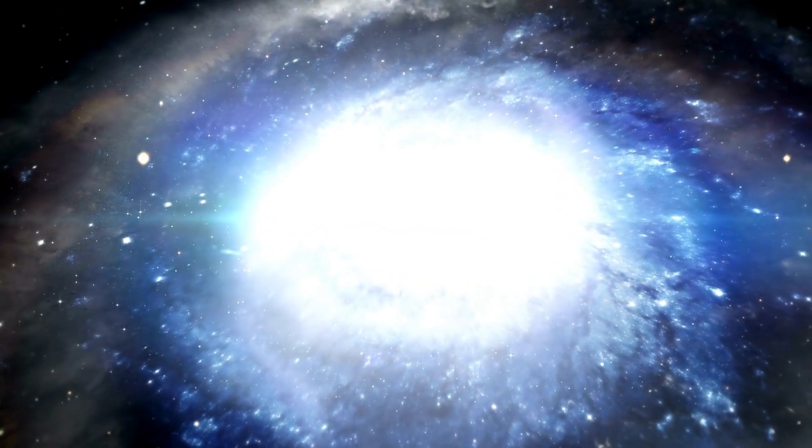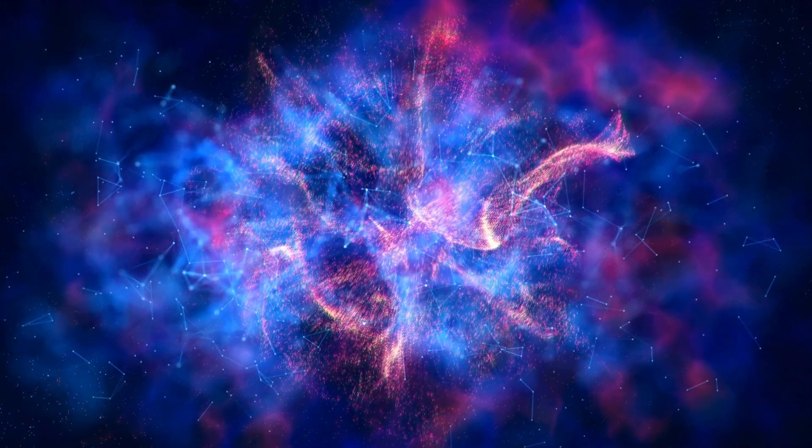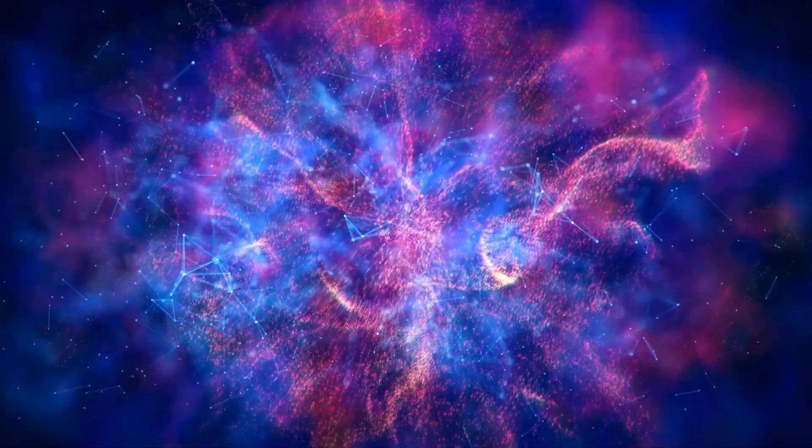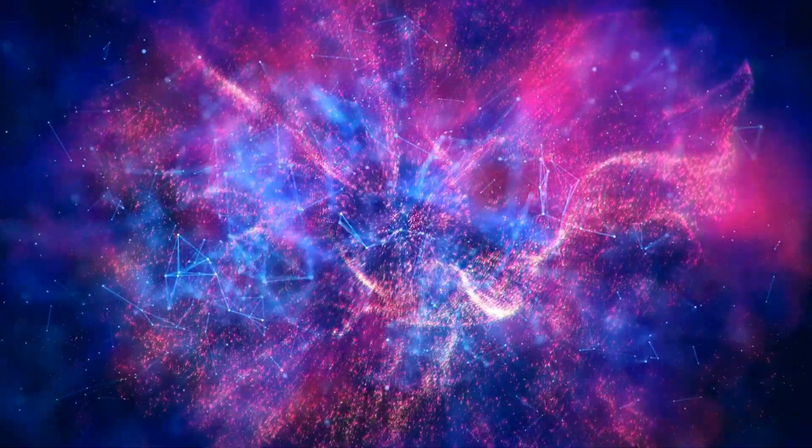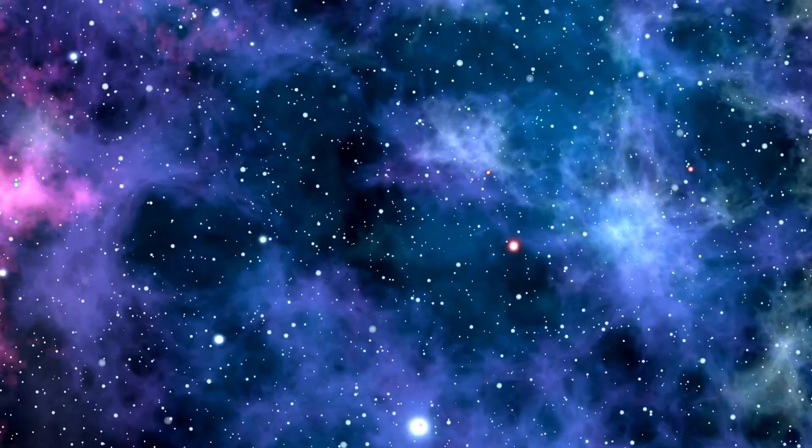Next in line were the Population 2 stars, forming a bit later but still in the universe's early days. Their original materials relied on heavy elements, especially iron. Many of them danced through their stellar life cycles, bursting into supernovas and adding more heavy elements to the universal mix.